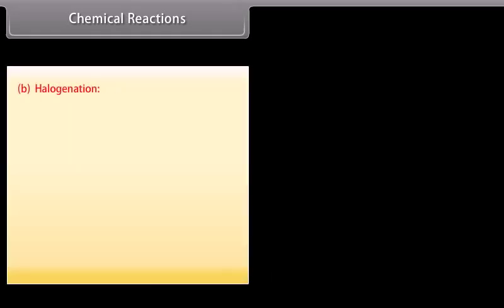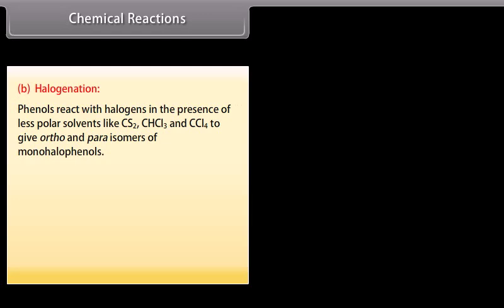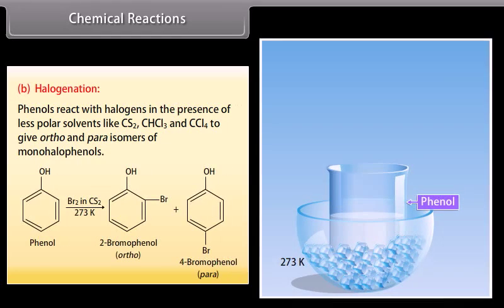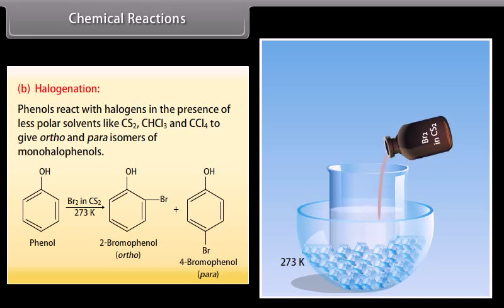Halogenation: phenols react with halogens in the presence of less polar solvents like carbon disulfide, chloroform, and carbon tetrachloride to give ortho- and para-isomers of monohalophenols. Bromine in carbon disulfide reacts with phenol and forms 2-bromophenol and 4-bromophenol.